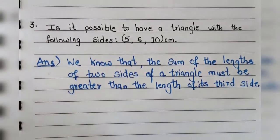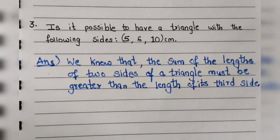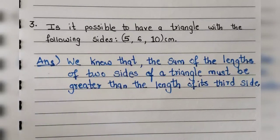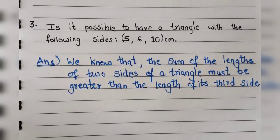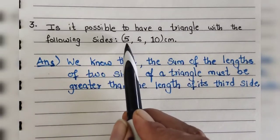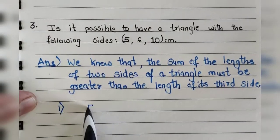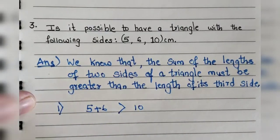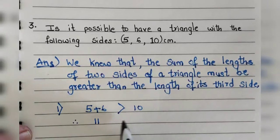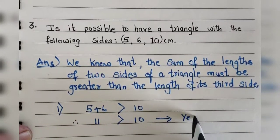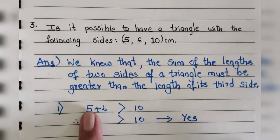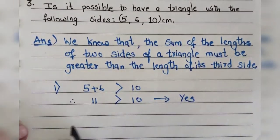We apply this property in three different ways, because if any one of the three ways is not valid, then the triangle is not possible. All three must hold for the triangle to exist. Let us check: first, 5 + 6 > 10? We get 11, and 11 is greater than 10 — yes, this holds.